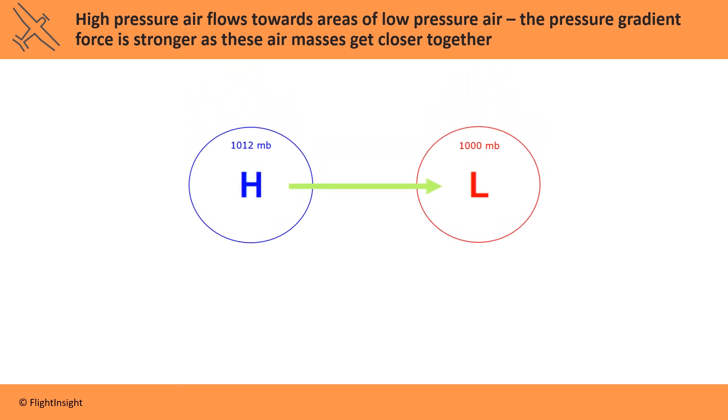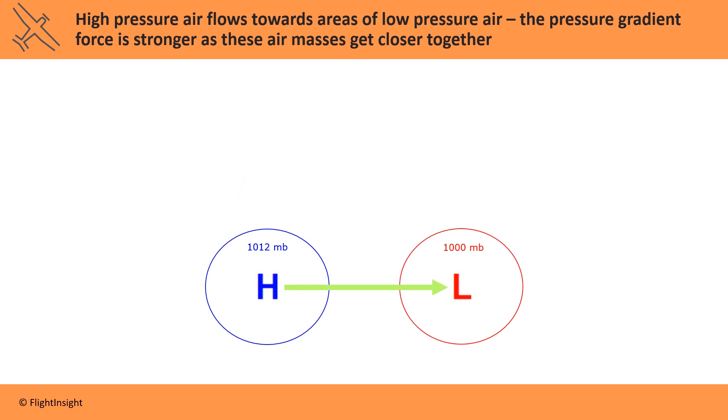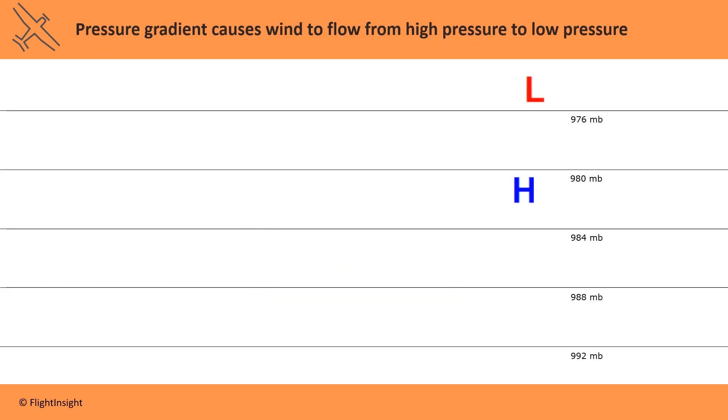The closer these zones are to each other, the stronger the force, called the pressure gradient force of the wind is. So pressure gradient causes wind to blow from high pressure to low pressure.